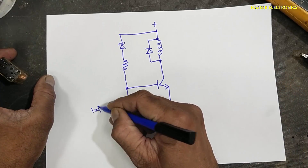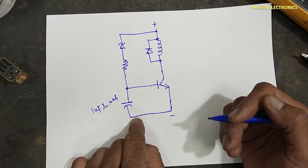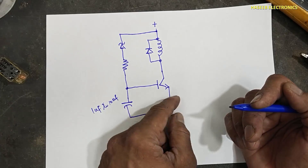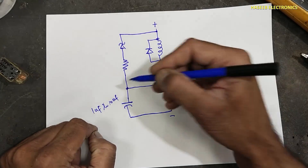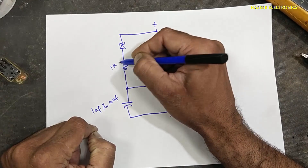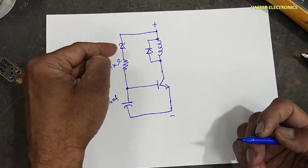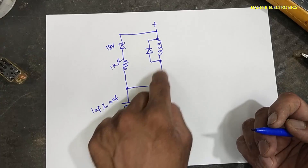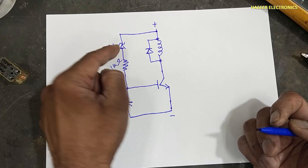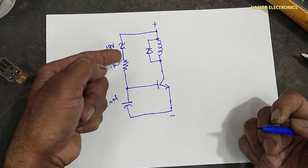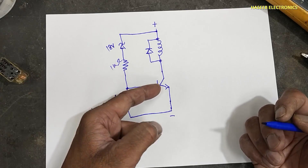We can use 1 microfarad to 4.7 or 10 microfarad — if we increase the capacitor value it will increase the delay time, both delay in turn-on and delay in turn-off. A 1 kilohm resistor is okay. With an 18-volt Zener, this will drive the relay at 18 volts, because when the voltage exceeds 18 volts it will allow Zener current to flow, which drives the base current into the transistor.